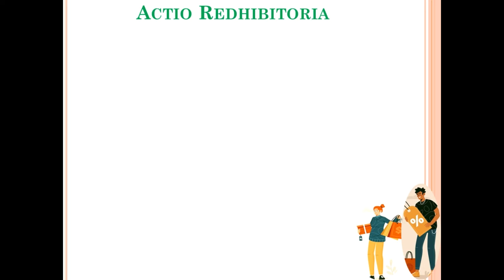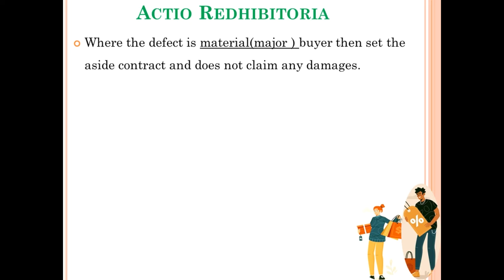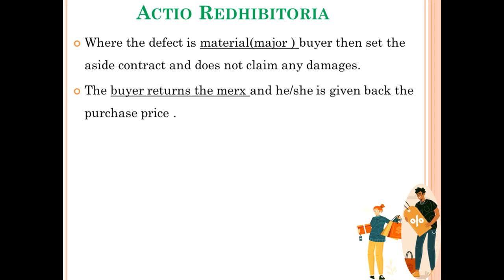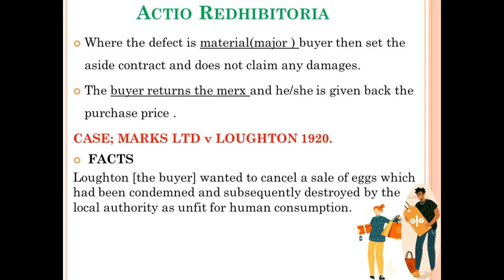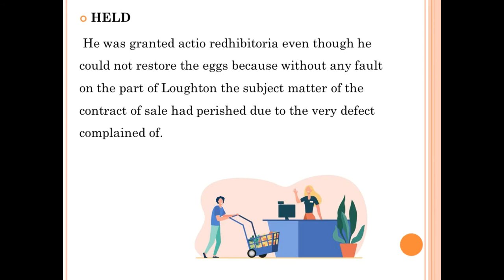Actio redhibitoria applies where the defect is material or major. The buyer sets aside the contract and does not claim any damages; the buyer returns the thing and is given back the purchase price. For instance, Lawton bought eggs from a seller which were destroyed by the local authority as they were unfit for human consumption. Lawton was granted actio redhibitoria — he was given his money back even though he could not return the eggs, as their destruction was out of his control.